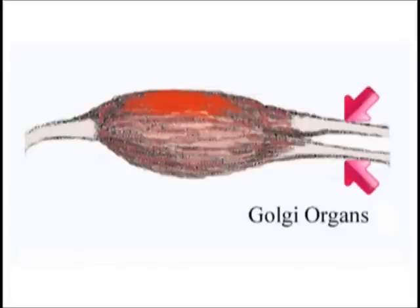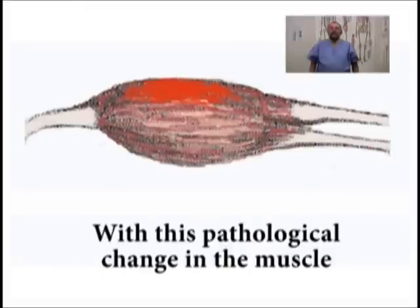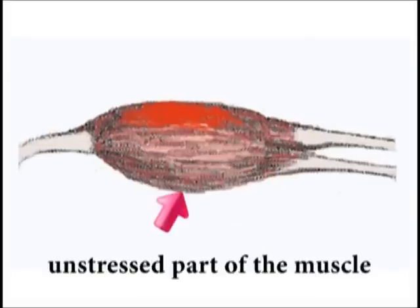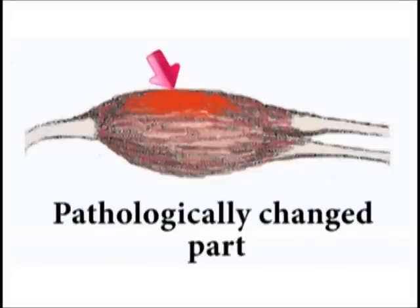At the time of maximum stretching, the Golgi tendon organ located in the tendon fires an electrical impulse that causes muscular relaxation. However, with this pathological change in the muscle, this impulse will bring relaxation to the unstressed part of the muscles and will not affect the pathologically changed part.